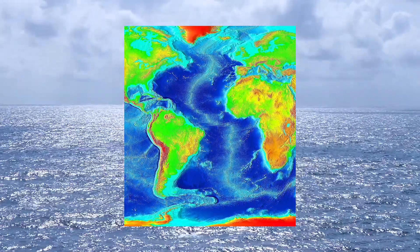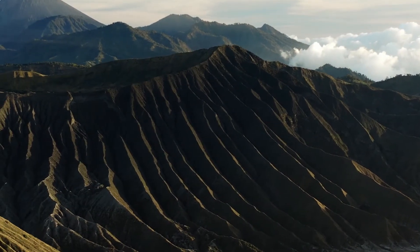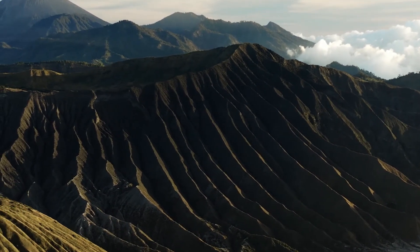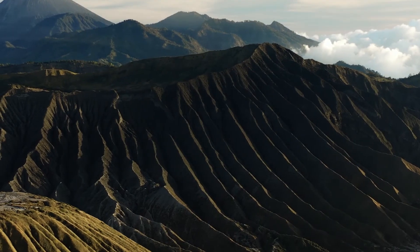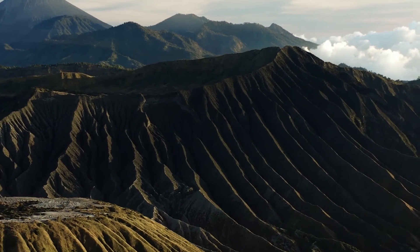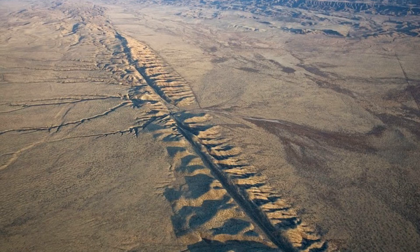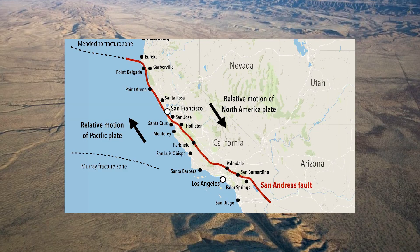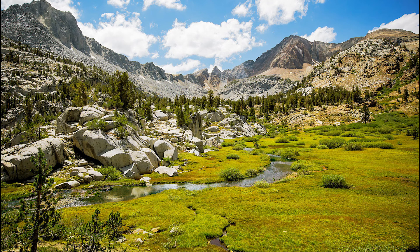Lastly, we have transform boundaries. When two plates slide past each other horizontally, they can get locked, causing immense stress. Eventually, the stress becomes too great, and the plates suddenly slip, resulting in intense earthquakes. These earthquakes can uplift sections of the Earth's crust, forming mountains along the fault lines. The San Andreas Fault in California is a famous example of a transform boundary. The movement along this fault has given rise to the stunning peaks of the Sierra Nevada mountain range.